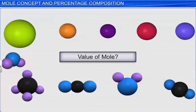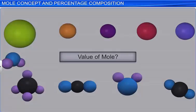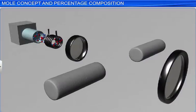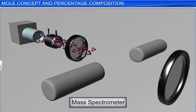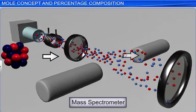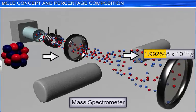We know that a carbon-12 atom is used as a base to calculate the atomic mass of elements. Hence, scientists used carbon as the base to determine the value of one mole. They used a mass spectrometer to determine the mass of a carbon-12 atom and found it to be 1.992648 × 10⁻²³ grams.